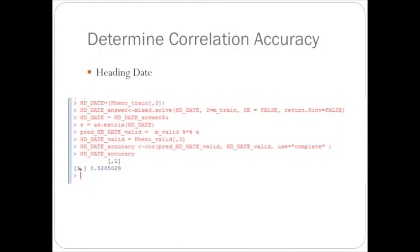And then for the third trait for heading date, this was the third column in the phenotype matrix. And again, correlating.